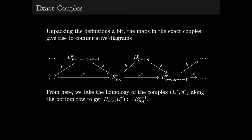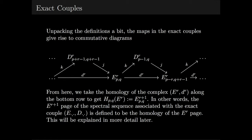Now if we look at this diagram a little more carefully, we see that we can actually take the maps in this exact couple and use them to construct a commutative diagram as shown below. From here, we take the homology of the complex E^R, D^R along the bottom row to get the homology of E^R, which will be E^{R+1} by definition. This is how we're defining the R+1 page.